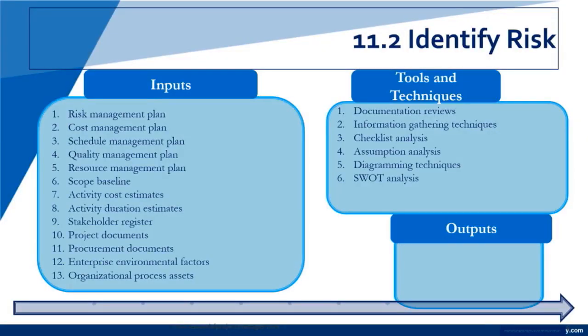We also use a technique called the SWOT analysis, which we'll go into in detail. Expert judgment is also used. The output is the risk register — the first major output of risk management after we've created the plan. We've designed the register so we know what items are in it, what information it contains, the format, and the structure. Now we identify risk, and the risk register starts to be populated.